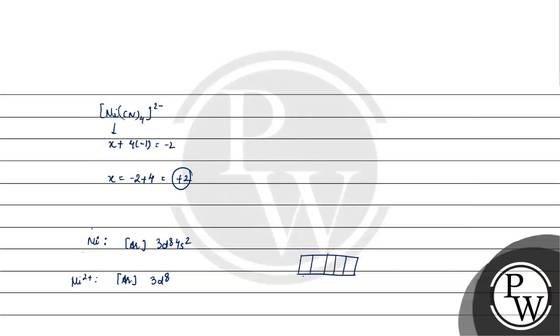So d8 configuration, filling starts: 1, 2, 3, 4, 5, 6, 7, 8. Chlorine is a minus ligand. If chlorine is the ligand, it's a strong ligand, so pairing of electrons will occur. The d orbitals are used for what? What will be the hybridization? dsp2.